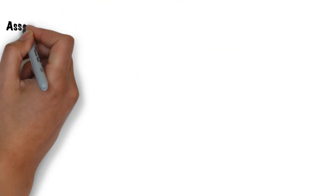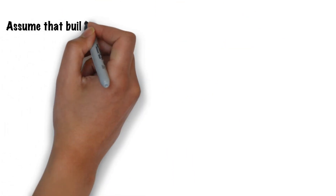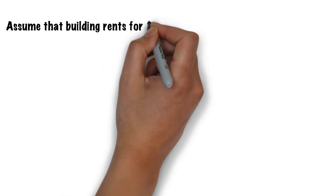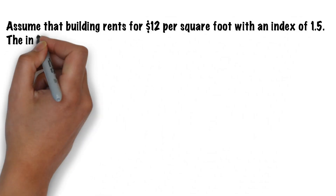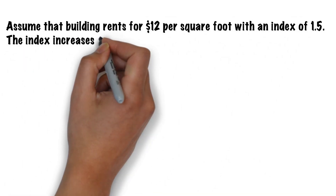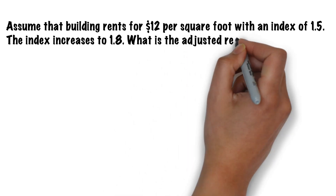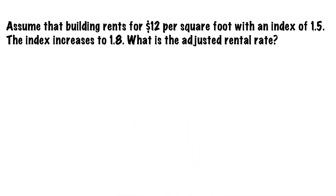Exam question: assume a building rents for twelve dollars per square foot with an index of 1.5. The index increases to 1.8. What is the adjusted rental rate? The first thing you're going to do is write down the new index — in this case 1.8 — then write down the old index, 1.5, and divide the two.